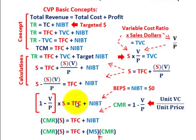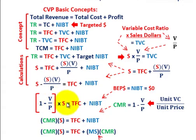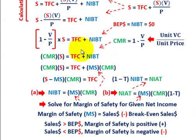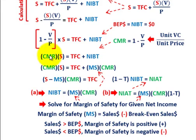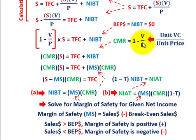So: CMR times S equals total fixed cost plus net income before taxes. If we're looking at a targeted break-even point, you just set net income before taxes equal to zero and solve for sales. The contribution margin ratio is defined as 1 minus unit variable cost divided by unit price.